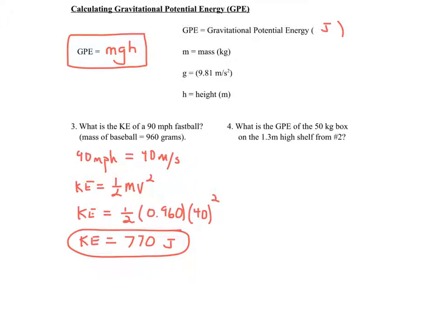Now let's do the example of number four here, GPE, gravitational potential energy. So the basic equation is GPE equals mgh. So the GPE of this box is the mass of the box, 50 kilograms. That's what we like. 50 kilograms times 9.8. If you want to round off to 10, you may. Times the height, 1.3 meters.